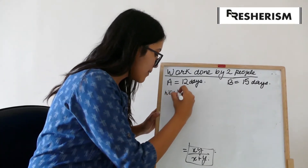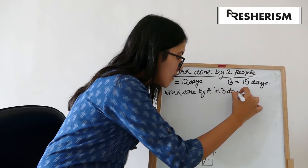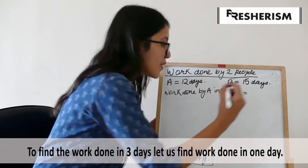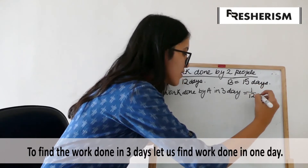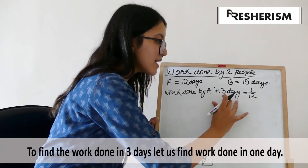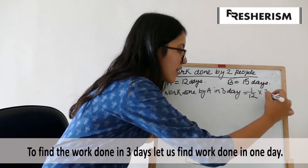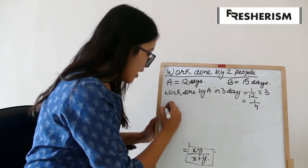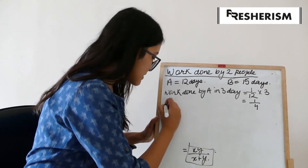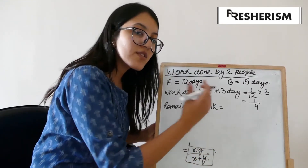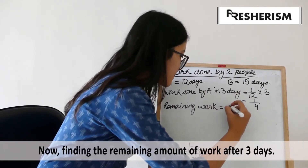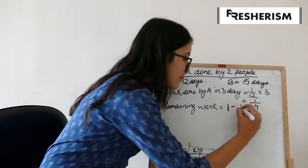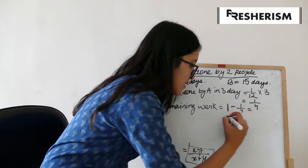Work done by A in 3 days: first, we find out the work done by A in one day, which is 1 by 12. Now, the amount of work done in 3 days will be 1 by 12 multiplied by 3, which gives us 1 by 4. Now, the remaining amount of work is 1 minus 1 by 4, considering the total amount of work as 1. That gives us 3 by 4.